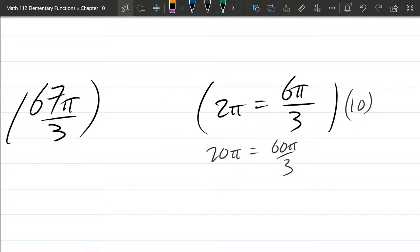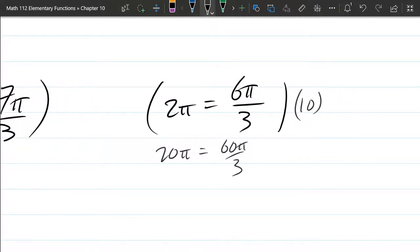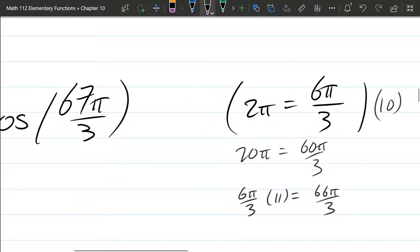I still need a little bit more to hit that 67π over 3. Let's go ahead and add one more rotation to this. So that'll be 6π over 3 times 11 now. It's 66π over 3. That's super close to 67π over 3.